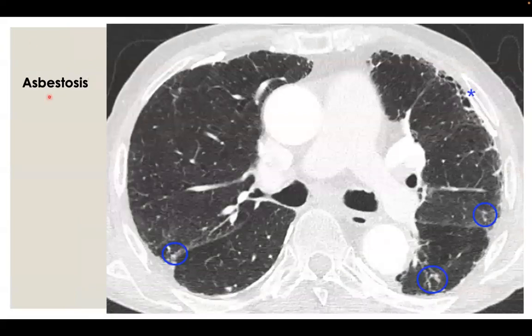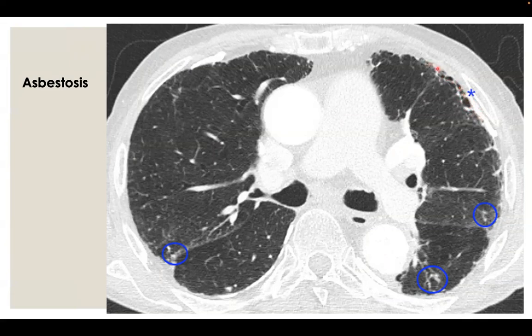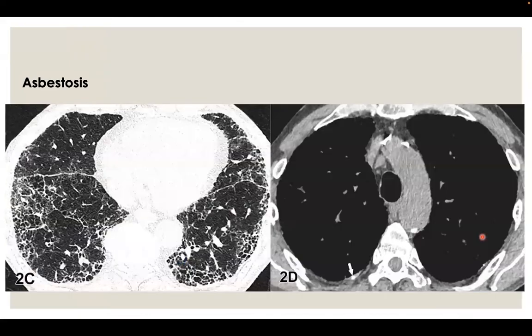In the case of asbestosis, a single layer of stacked cystic structures stacked along the pleural surface is shown, with the presence of calcific pleural plaques — this renders the UIP pattern as an alternative diagnosis, which is asbestosis. Another example shows honeycombing along the lung bases subpleurally, but the presence of calcific pleural plaques makes the diagnosis asbestosis. And that's it — thanks.